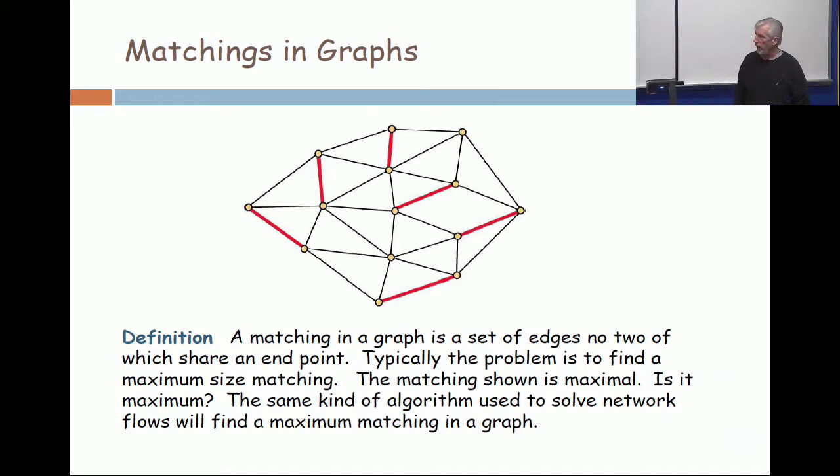This might be a set of co-ed students and the edges represent friendship and now the matching represents roommates. So I'm going to put two co-eds in the same room if they're friends, and no more than two co-eds in the same room. So it makes sense to try to find the maximum matching.